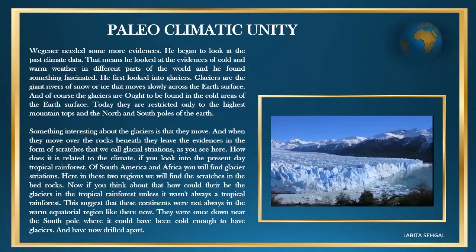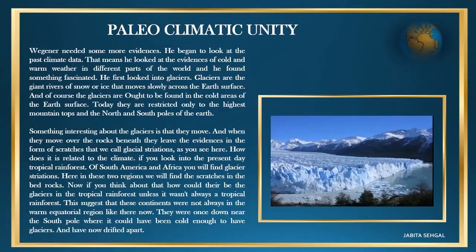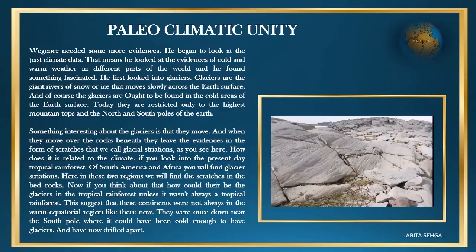Our next evidence is paleoclimatic unity. Wegener began to look at past climatic data — evidence of cold and warm weather in different parts of the world — and found something fascinating. He first looked at glaciers, which are found in the cold areas of the Earth. Today they are restricted only to the highest mountain tops and the north and south poles. Something interesting about glaciers is that they move, and when they move over rocks beneath, they leave scratches that we call glacial striations.